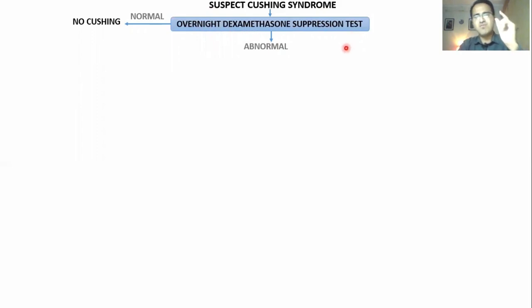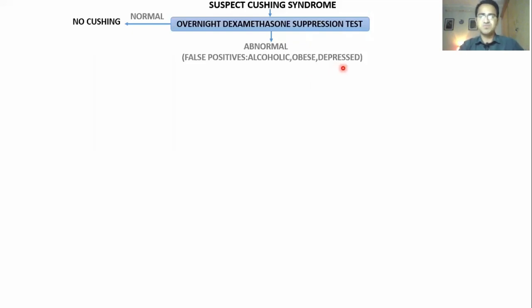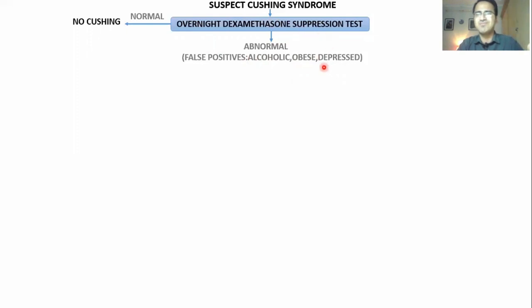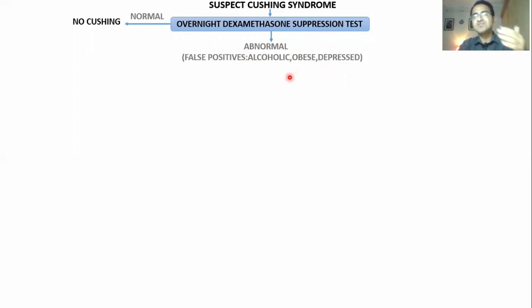The overnight dexamethasone suppression test has some false positives. It is false positive in patients who are alcoholic, obese, or depressed, because these patients are already in a stressful condition in which cortisol levels are elevated and the low-dose dexamethasone cannot suppress them. These patients normally have elevated cortisol compared to normal individuals because they are in a stressful condition.